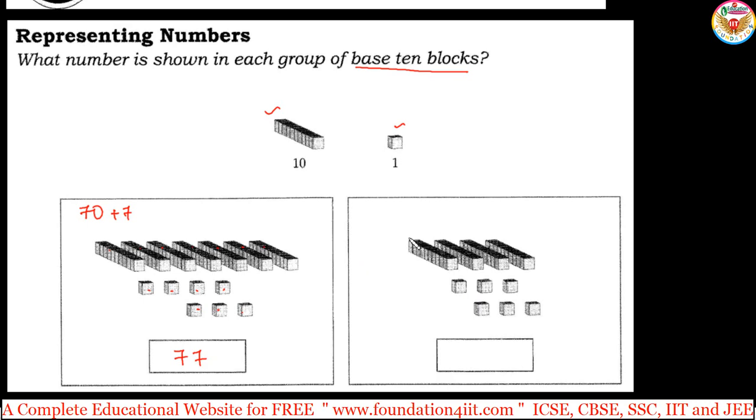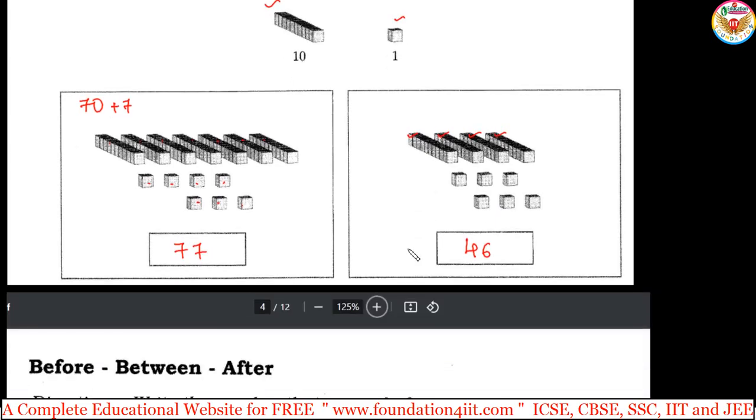Next, we have base 10 blocks. So, 1, 2, 3, 4 count, 4 plus 1, 2, 3, 4, 5, 6. So, 4 and 6, 46, 40 plus 6, so 46. So, you have 3, 4 pages like this in PDF, just you can use all that base 10 blocks and doing that.